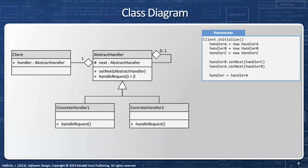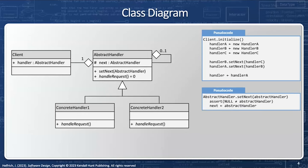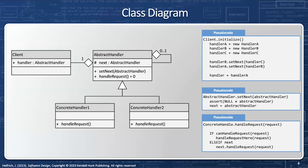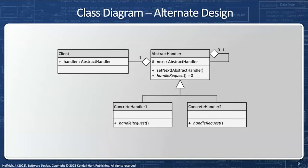Let's take a look at the pseudocode for initialize. I'm going to create three different handlers, and I'm going to call set_next, set_next, set_next — that's how I build my linked list. The pseudocode for set_next simply sets the next pointer to an abstract handler. When I want to handle a request, I first check if I am able to handle it — in other words, am I qualified to deal with this event? If the answer is yes, I call handle_request here. Otherwise, I call handle_request on the next one in the chain.